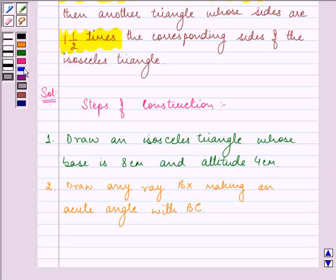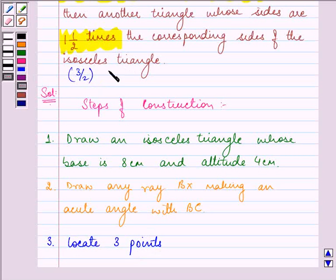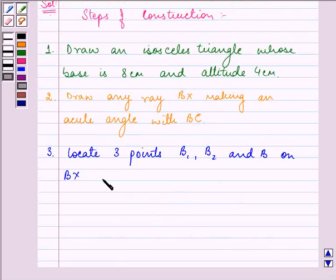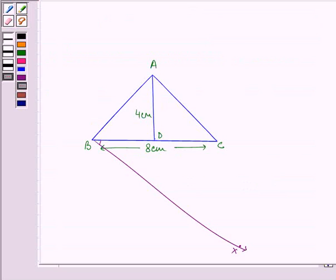Now the third step is to locate 3 points, because 1.5 means 3 by 2 and the greater of 3 and 2 in 3 by 2 is 3. So we will locate 3 points B1, B2, and B3 on BX such that BB1 is equal to B1B2 is equal to B2B3. So here we have BB1 equal to B1B2 equal to B2B3 on ray BX.